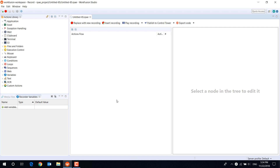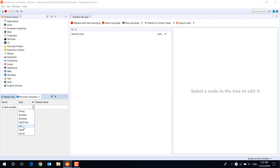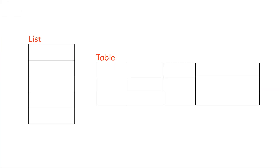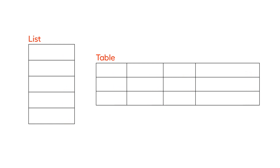Hi everyone! In this video you will learn how to work with complex variable types – list and table. These variable types consist of multiple values, each of string type. Lists and tables are needed when you want to do the same set of actions for all items in the list and rows or columns in the table.